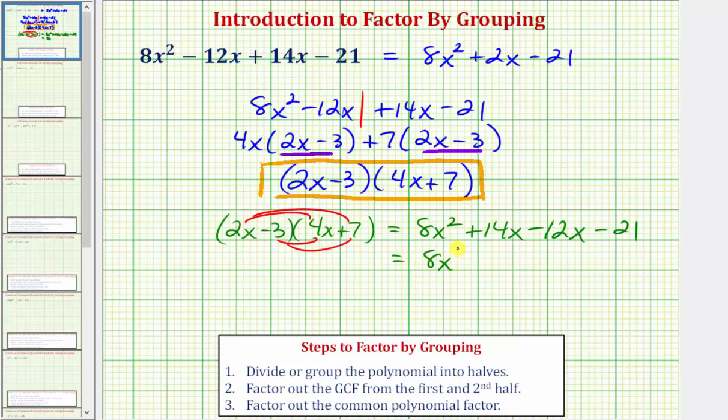We'd have 8x². And then 14x minus 12x is 2x, so we have plus 2x minus 21, which we know is equivalent to the given expression. I hope you found this helpful.